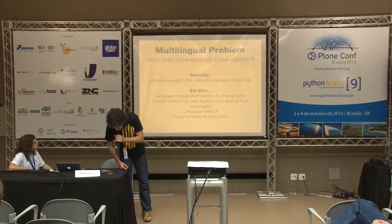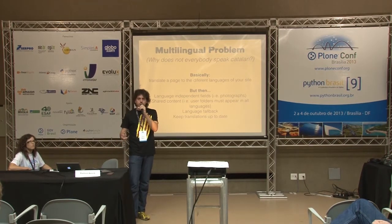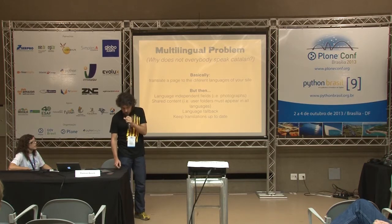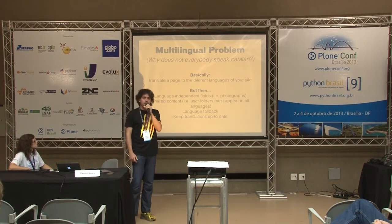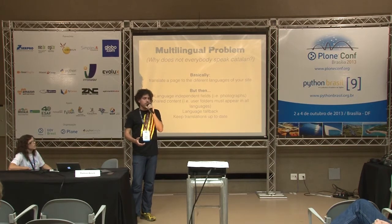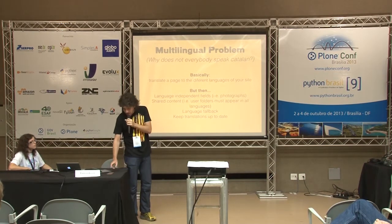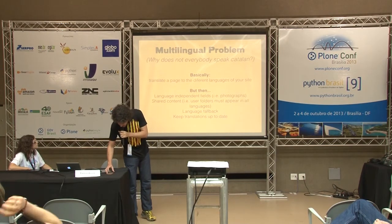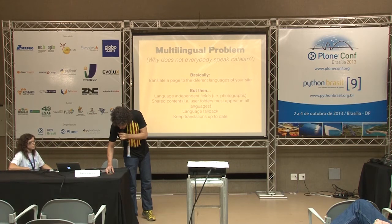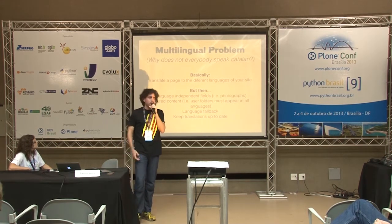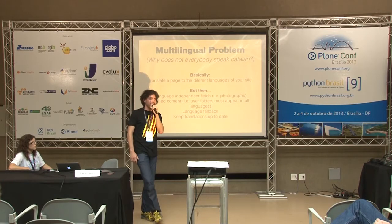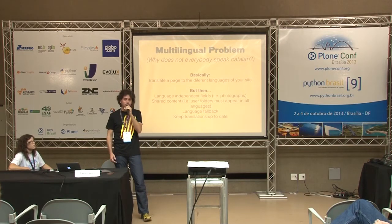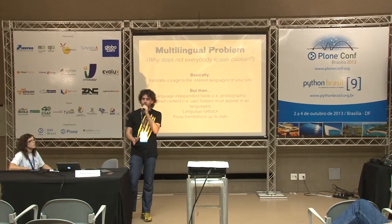More problems are language fallbacks: what happens when we try to access content that hasn't been translated to the language we want? And keeping translations up to date — if anybody modifies an object, they need to be notified that the translations need to be updated as well.